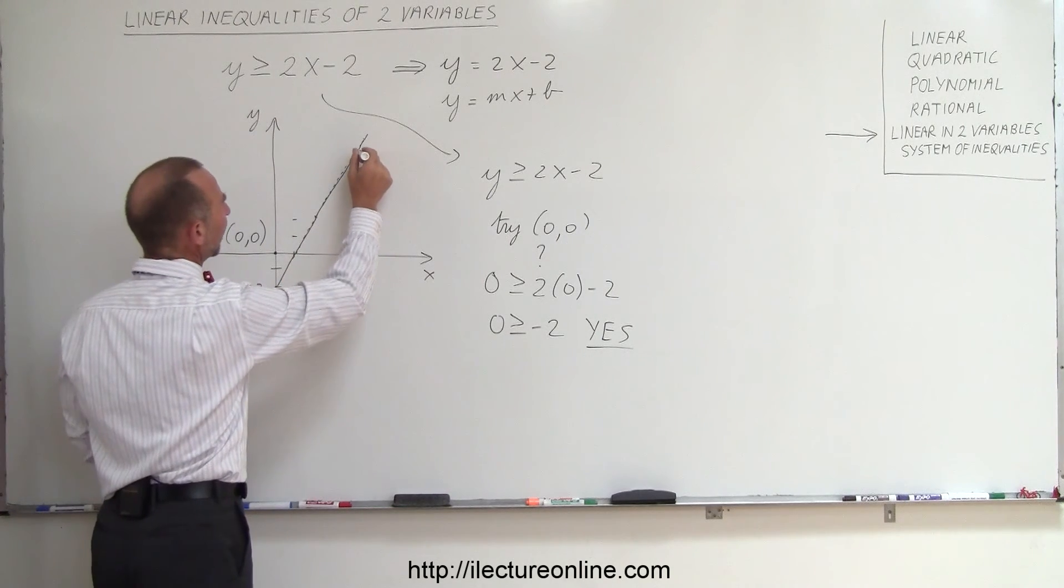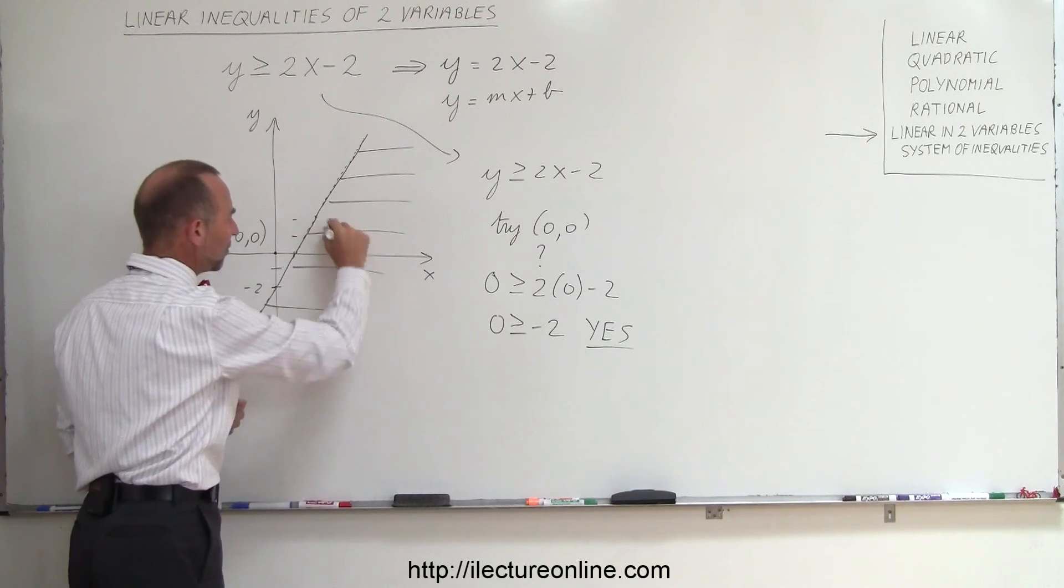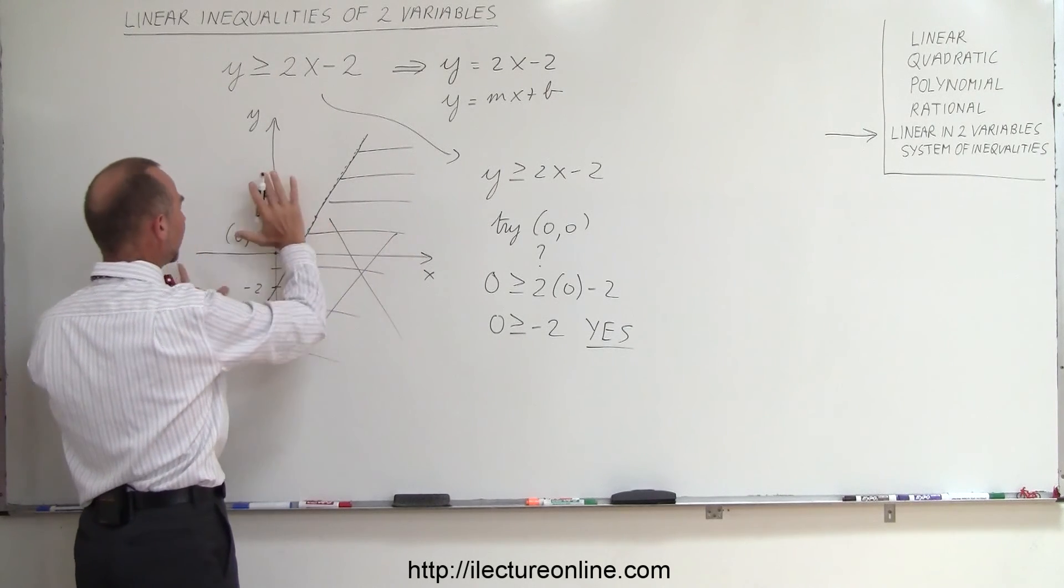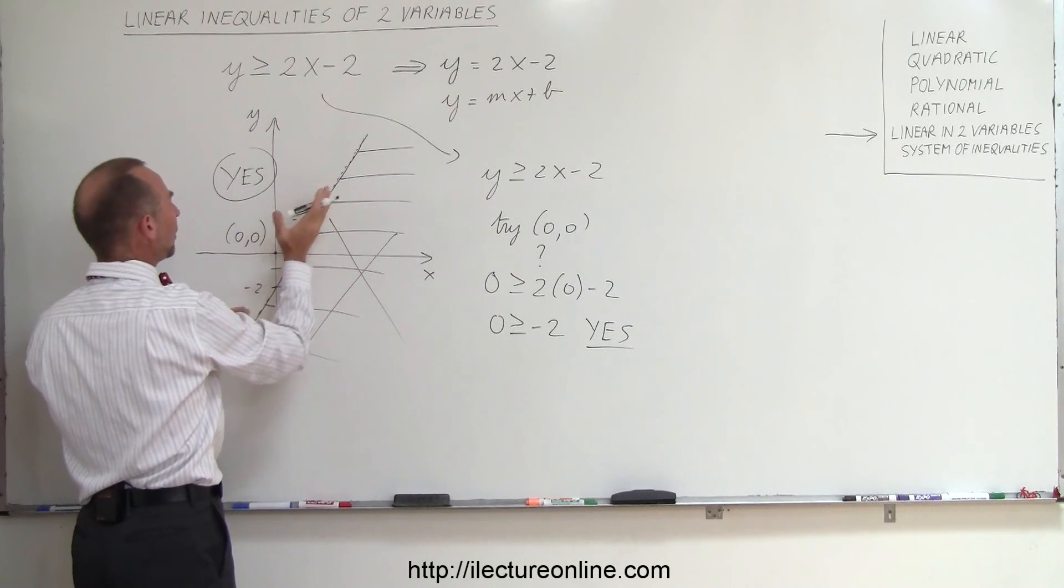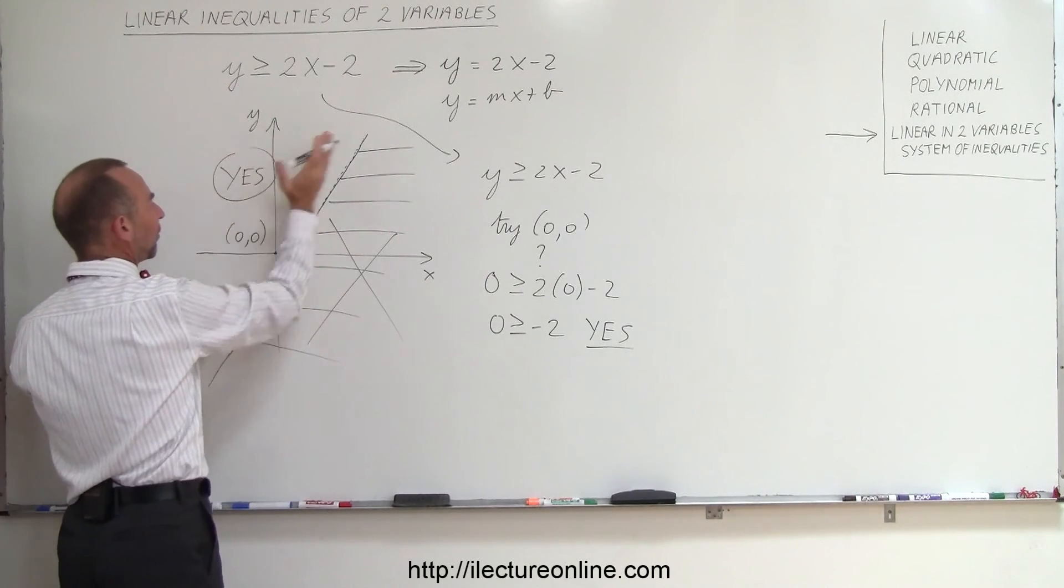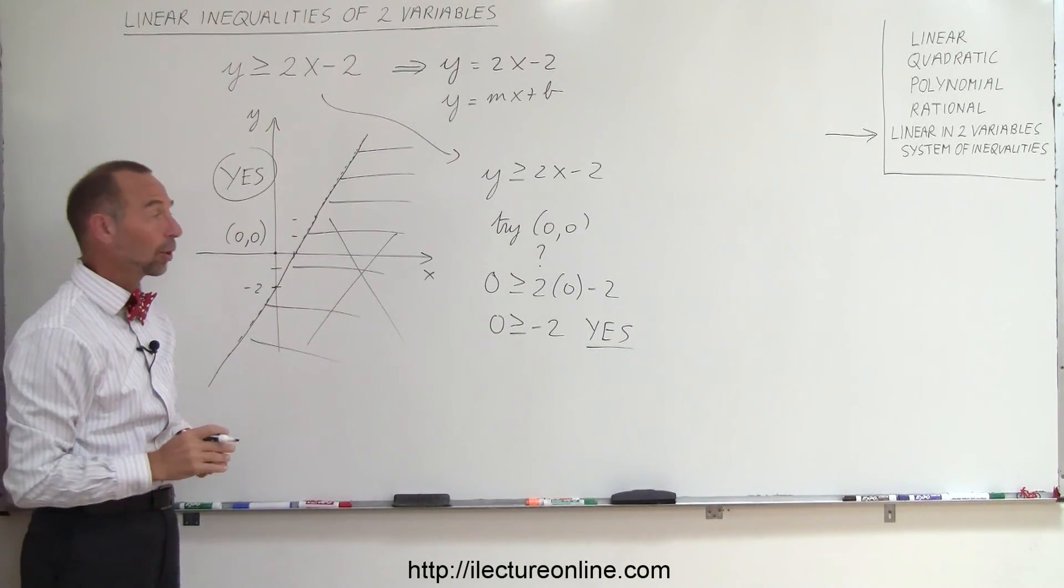What I like to do is I like to get rid and say this is the side that does not satisfy inequality, this is the side that does satisfy inequality, and so therefore all the points to the left of that line satisfy this inequality. And that's how that works.